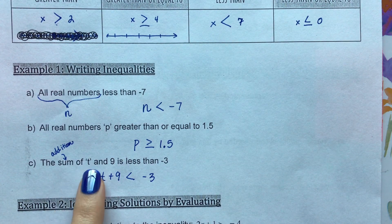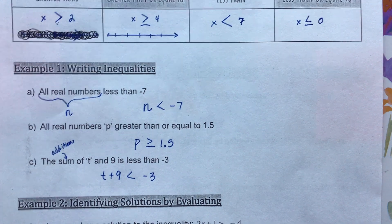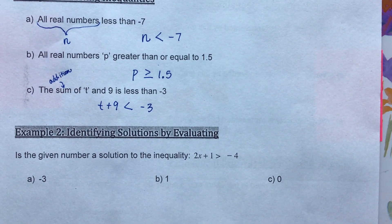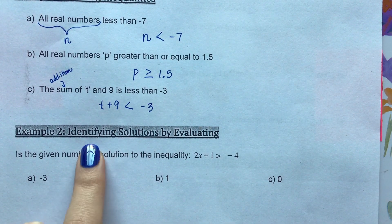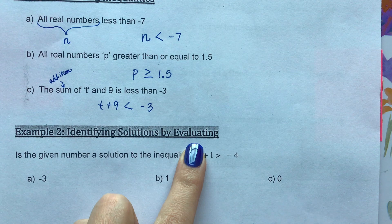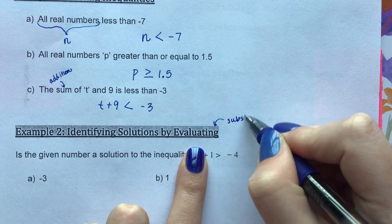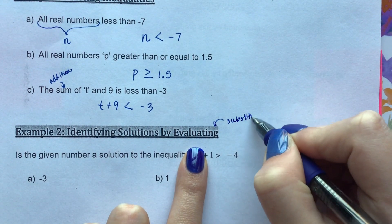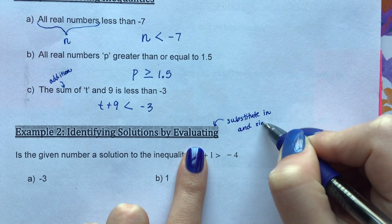Just remember to break it down word by word. You might have to read it through a couple of times, and that's okay — that helps us understand what's going on in the problem better. Next we have: identify the solutions by evaluating. Evaluating basically means substitute in and simplify.